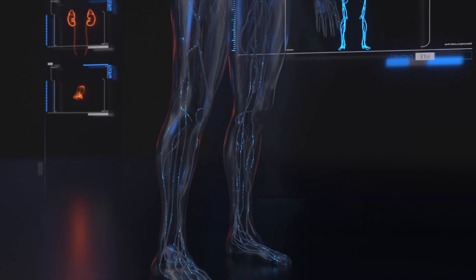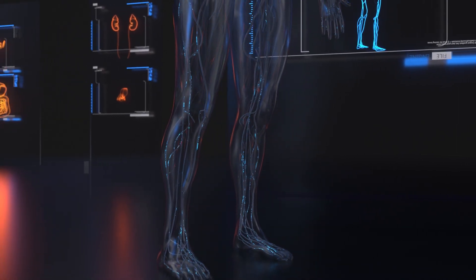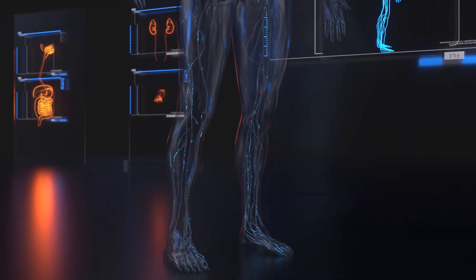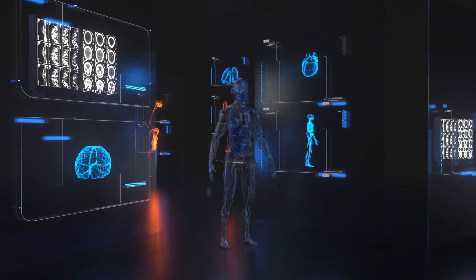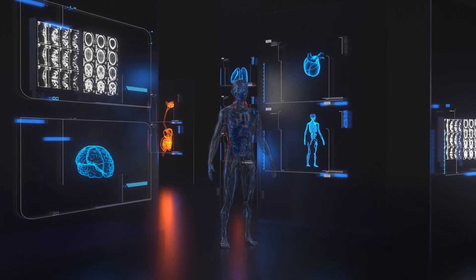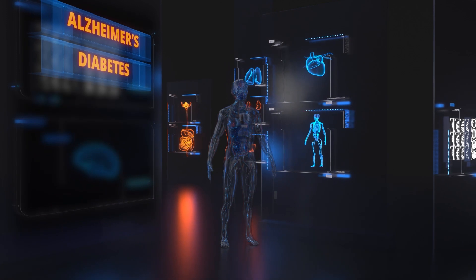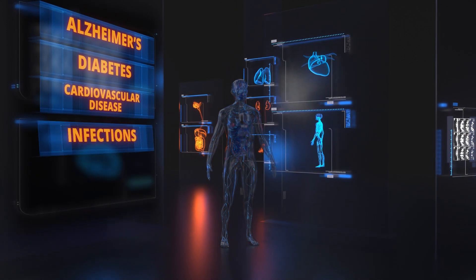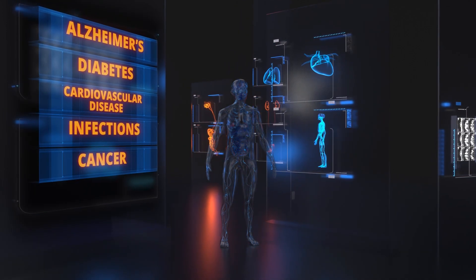The biggest risk to a healthy immune system is aging. Aging diminishes the quality of the immune system's response, which plays a role in the development of diseases such as Alzheimer's disease, diabetes, cardiovascular disease, infection, cancer, and muscle atrophy.